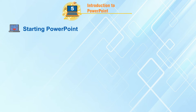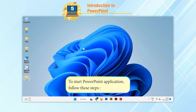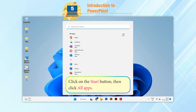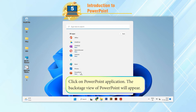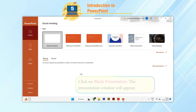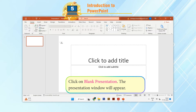Starting PowerPoint: To start the PowerPoint application, follow these steps. Click on the Start button, then click All Apps. Click on the PowerPoint application. The Backstage view of PowerPoint will appear. Click on Blank Presentation. The presentation window will appear.